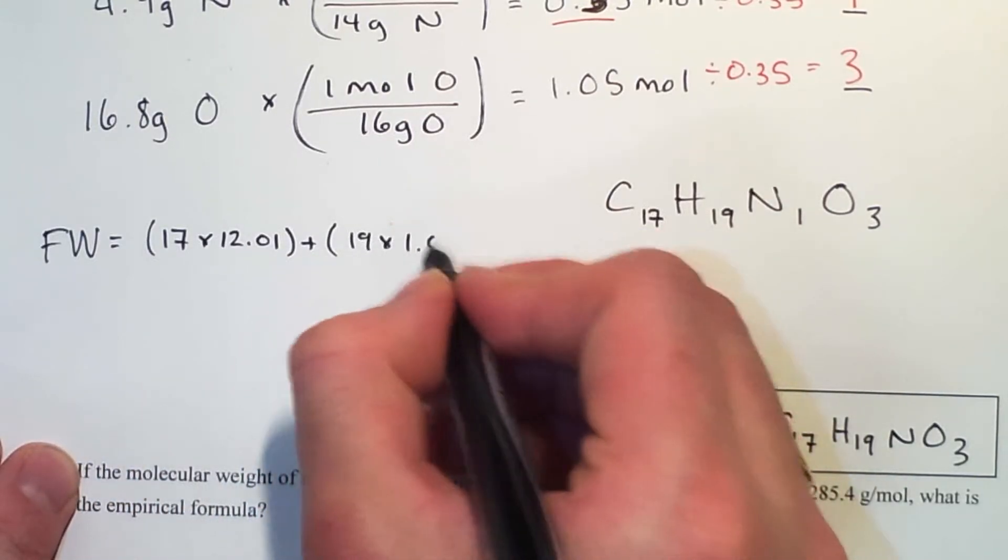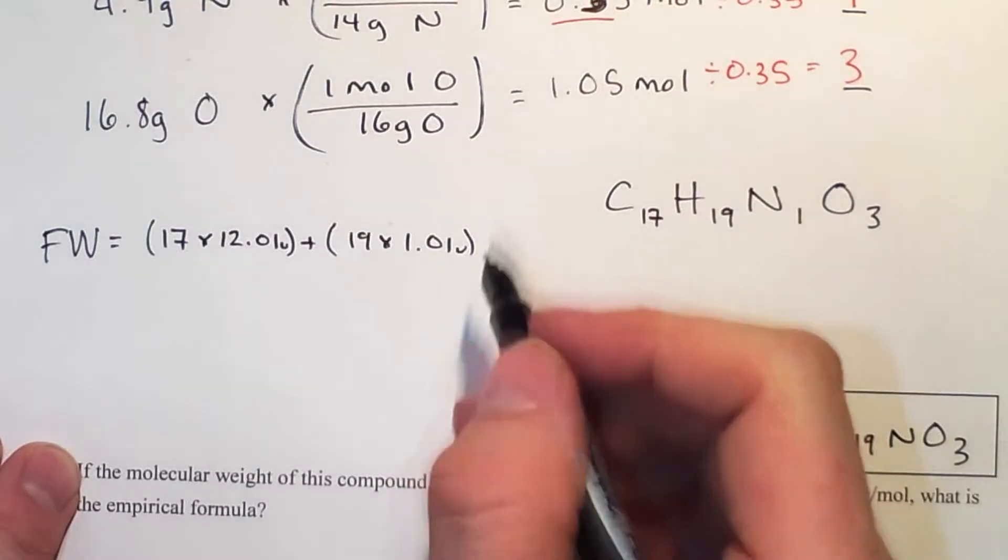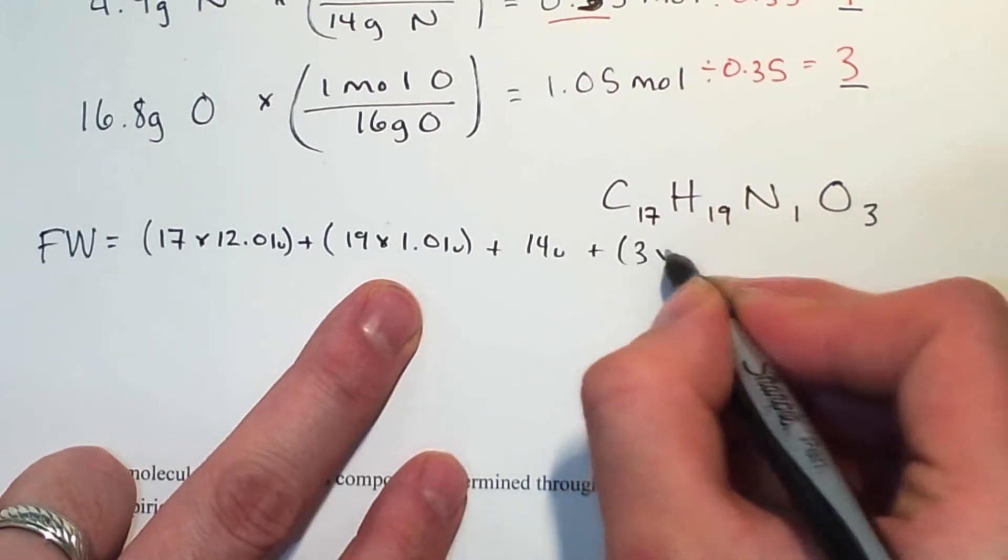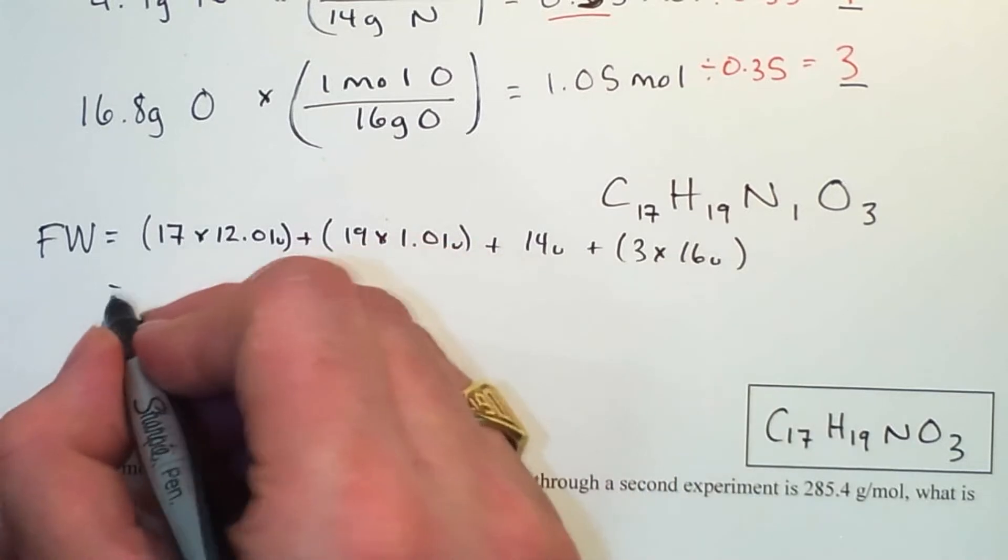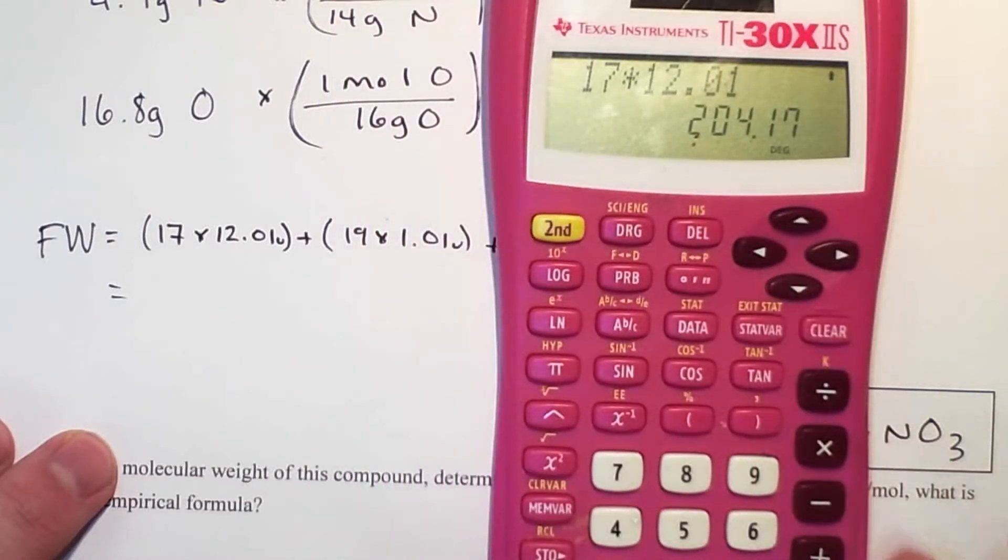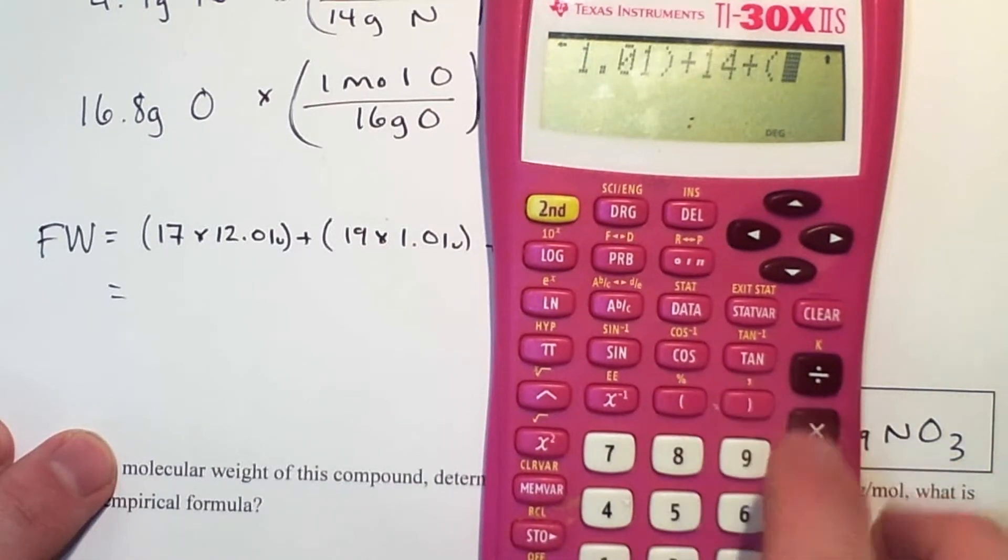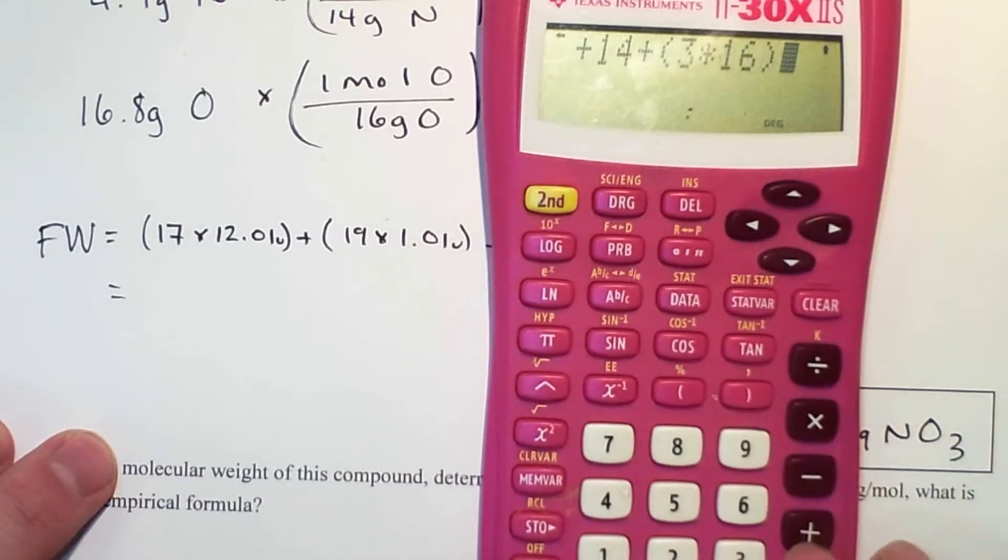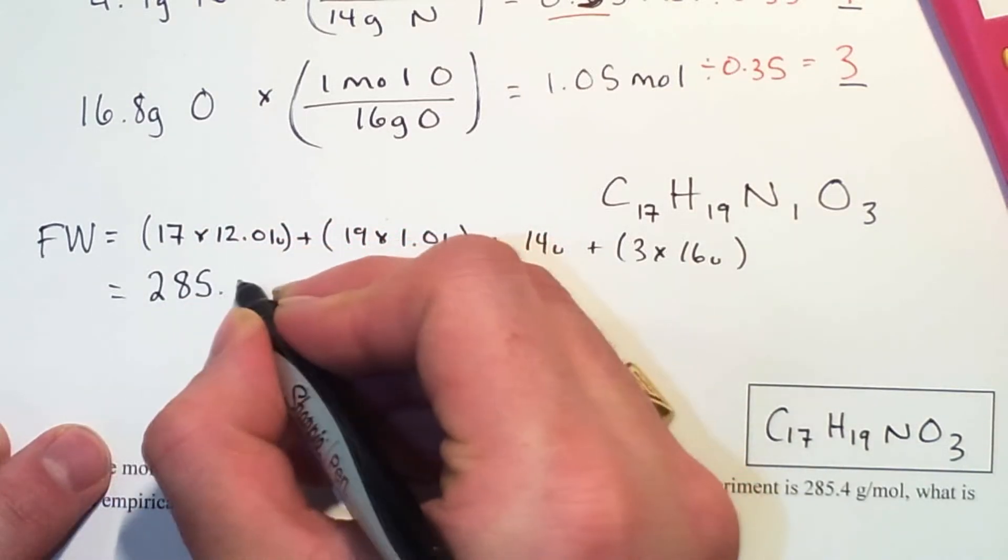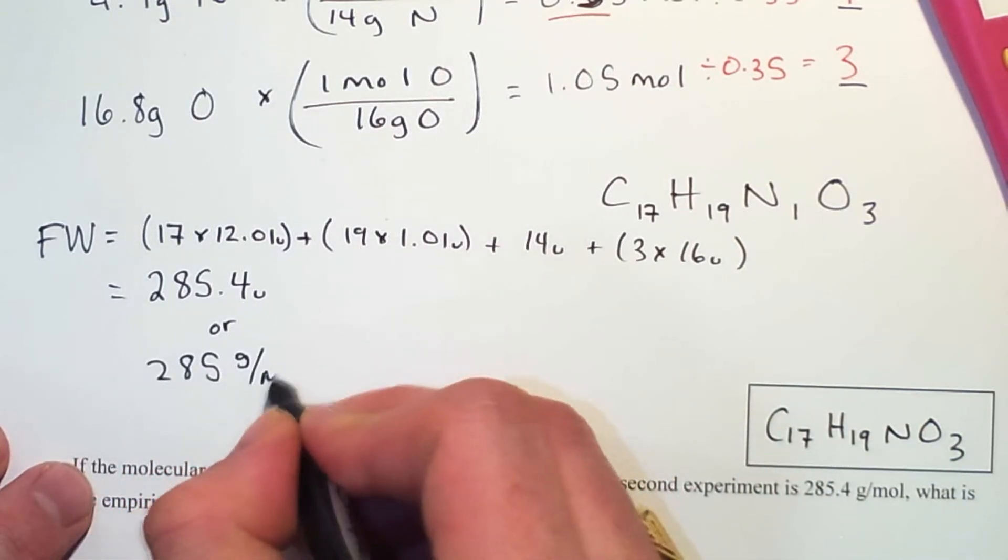So I have 17 carbons, 19 hydrogens. 12.01 is the weight of carbon and 1.01 is the weight of hydrogen. 17 times 12.01 plus 19 times 1.01 plus 14 plus 3 times 16 is 285.4 u or 285 grams per mole if we want a molar mass.